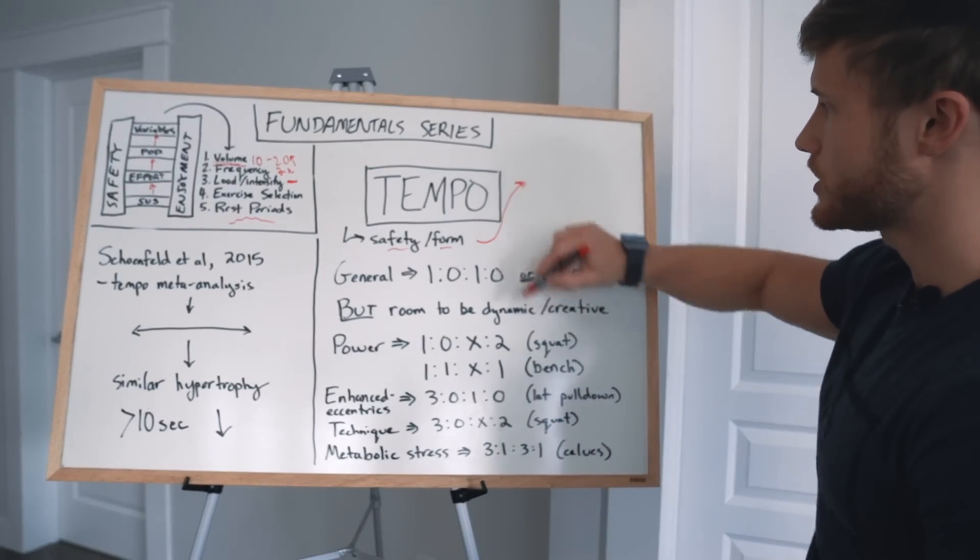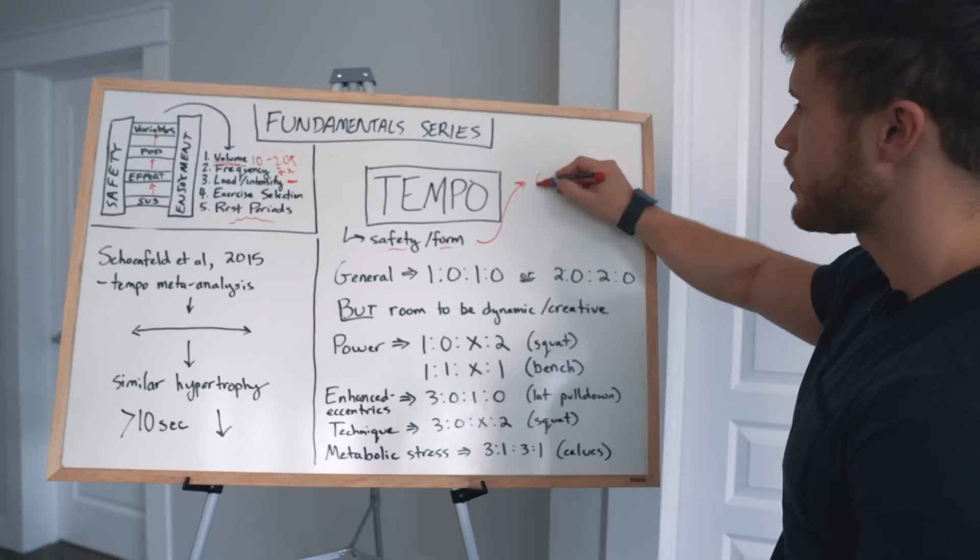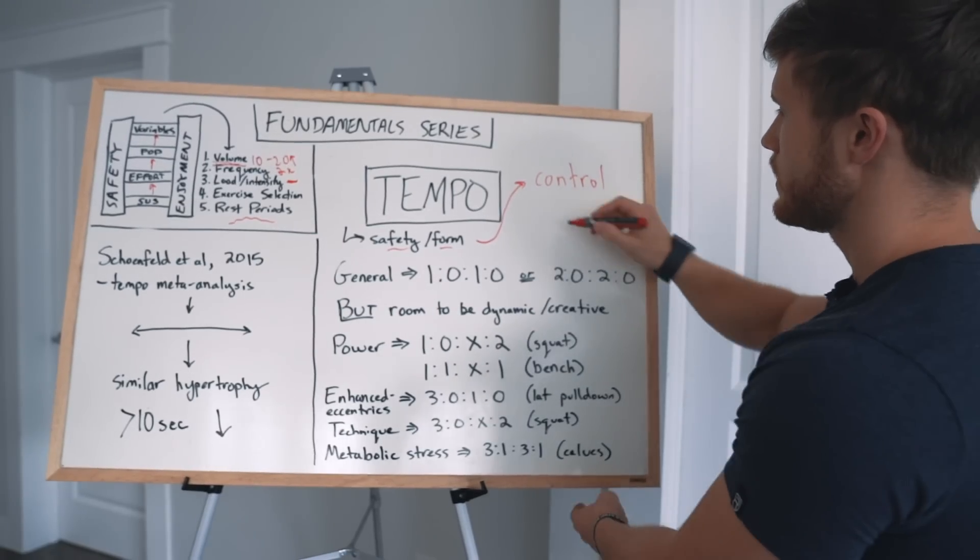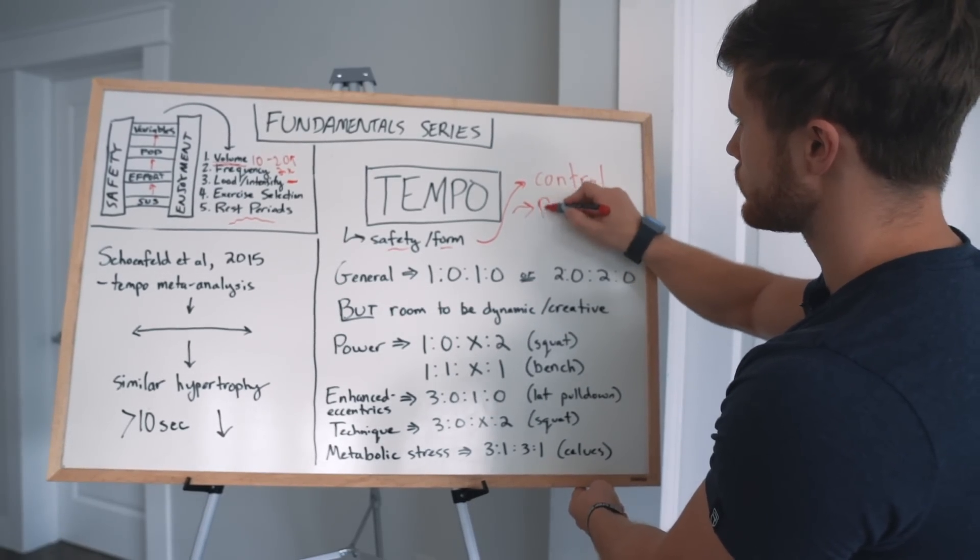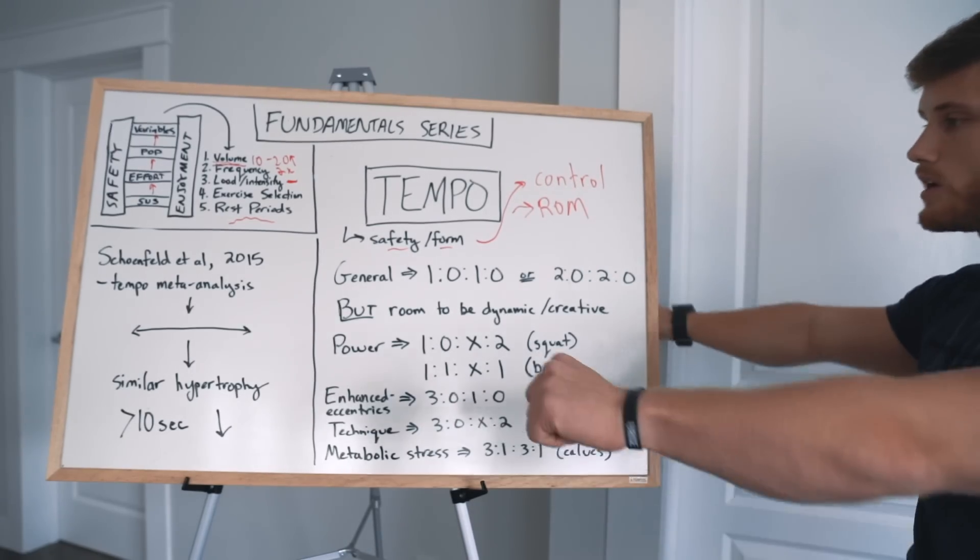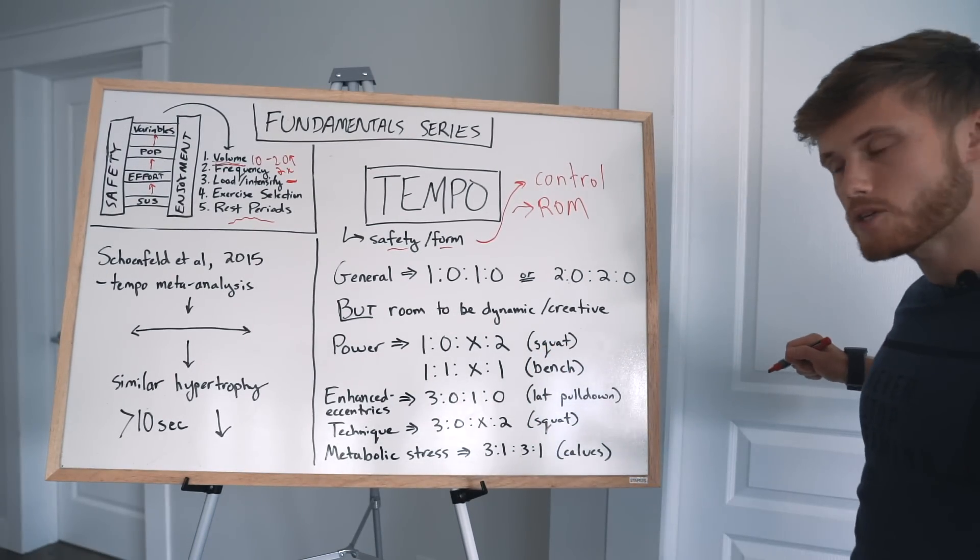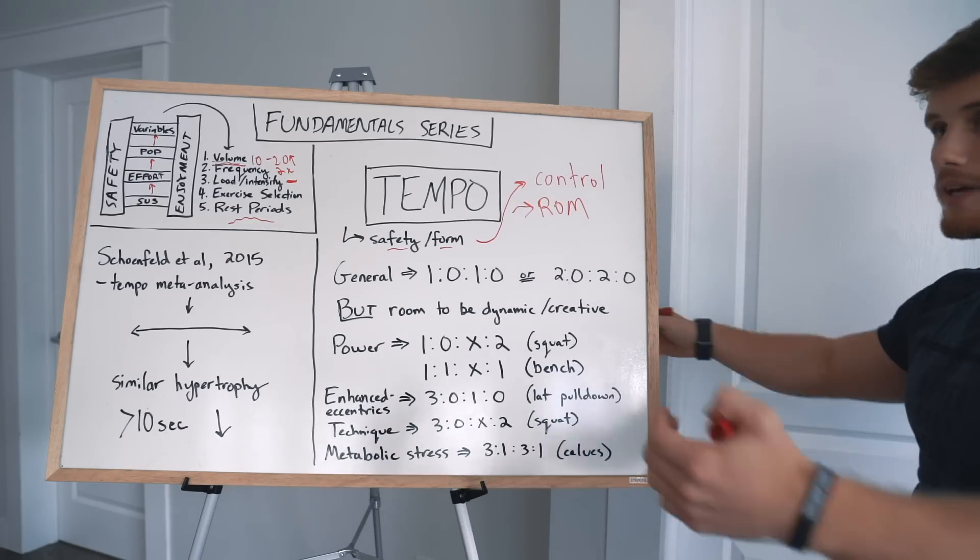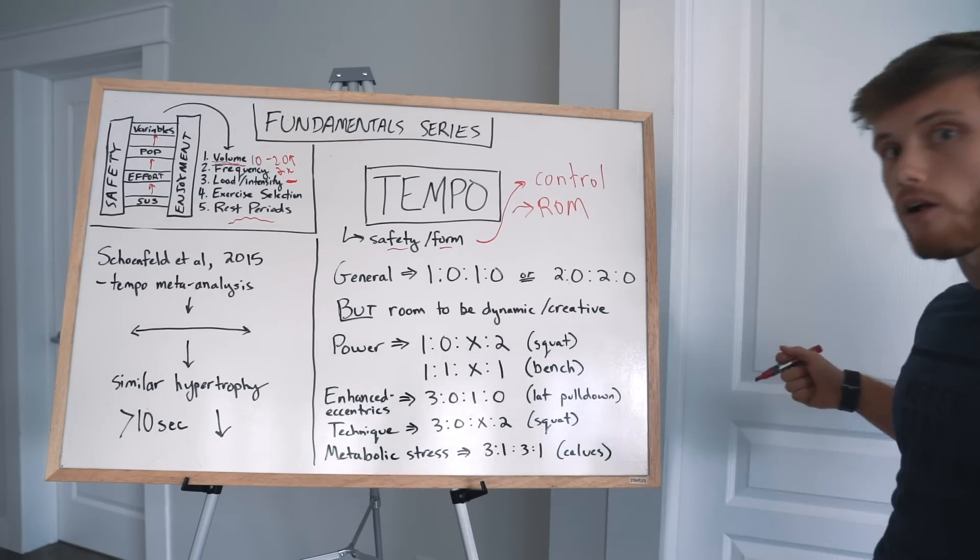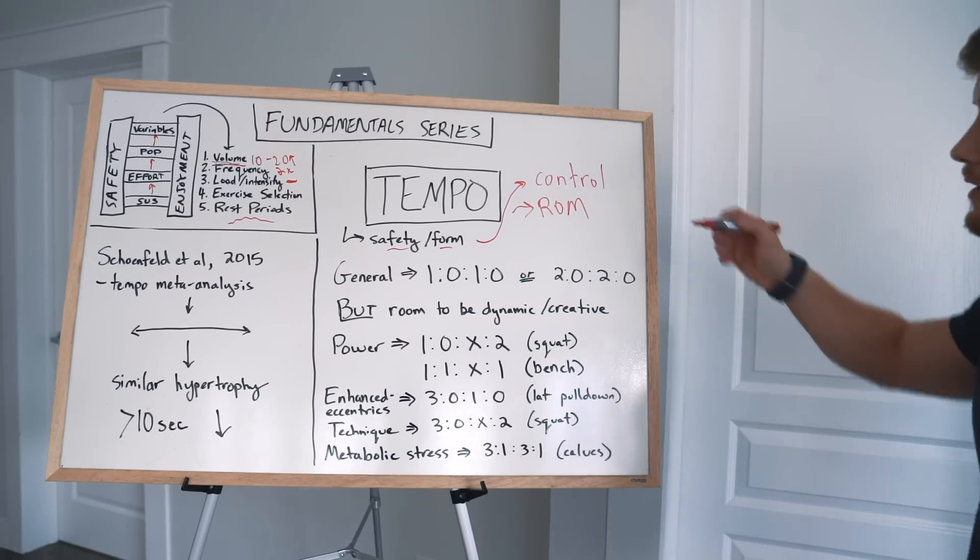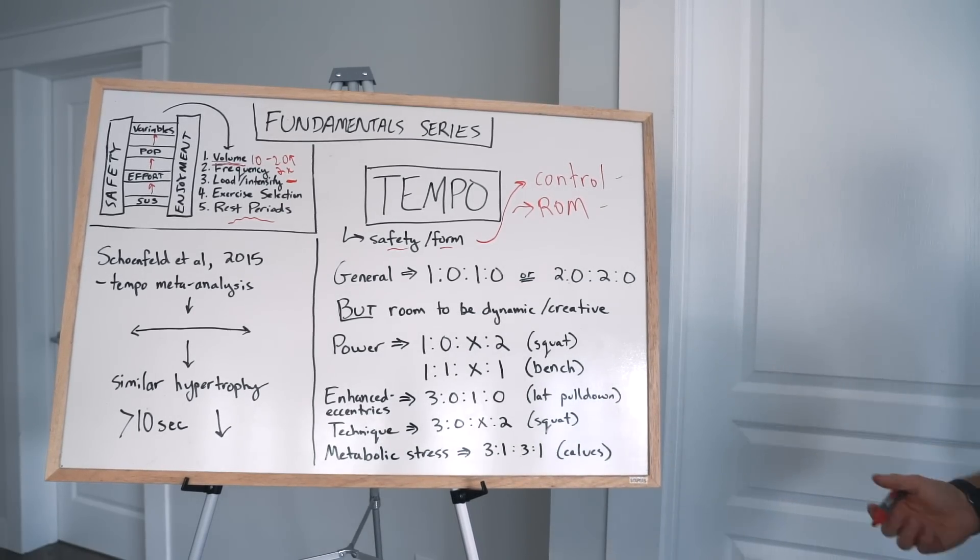So just a quick reiteration here of what we mean by proper form. For the most part, it comes down to good control, and it comes down to full range of motion. So for the most part, say you're doing a chest press, you want to be bringing the weight all the way down to your chest, and then all the way out to full extension. And you also want to be controlling the weight, not just letting it fall under the force of gravity. You actually want to be resisting gravity on the way down. And I would say these are the two most important things.